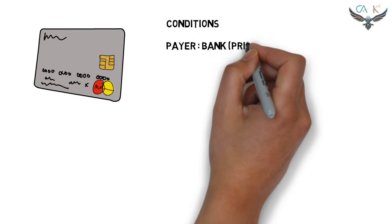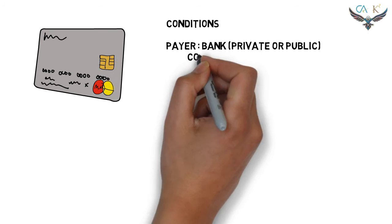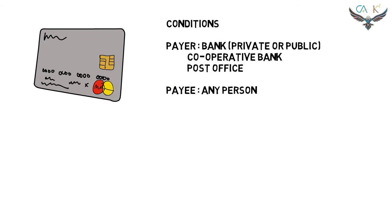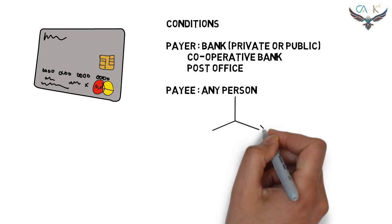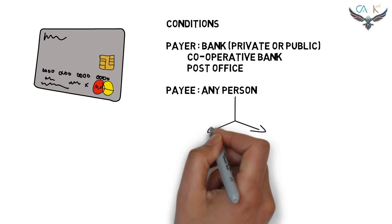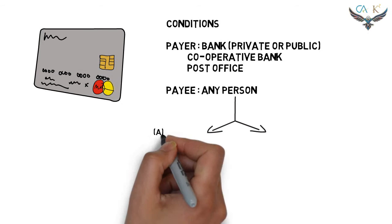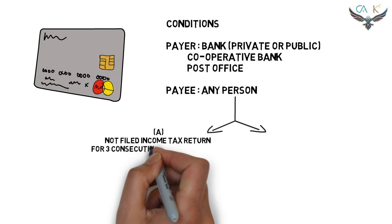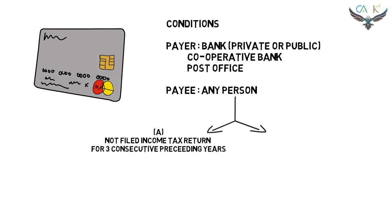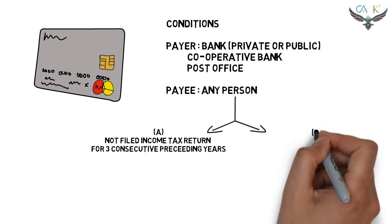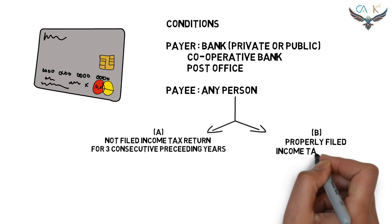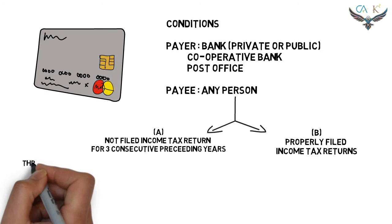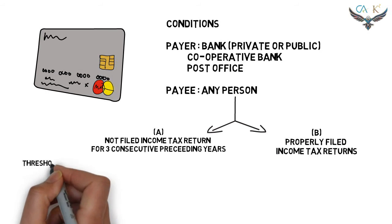The deductors are banks — whether private or public — cooperative banks, and the post office. The payee shall be classified into two categories: on one side, the person who has not filed an income tax return for three consecutive preceding years, and on the other side, the person who has properly filed the income tax return. The reason for this classification is that the rates and threshold limits are different for these two types of persons.